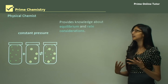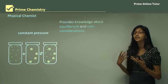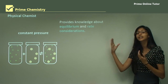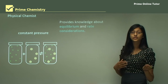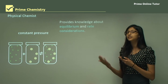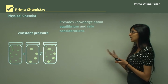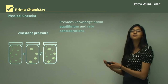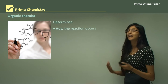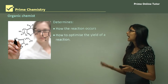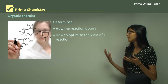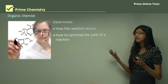A physical chemist provides knowledge about equilibrium and rate of reaction — is the reaction too slow, or do we need a different catalyst? An organic chemist determines how the reaction occurs and how to optimize the yield, so that the amount of product formed is greater relative to the energy used and costs are minimized.